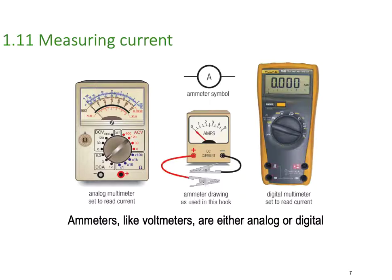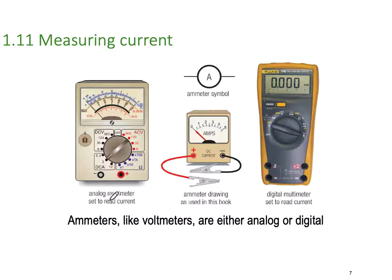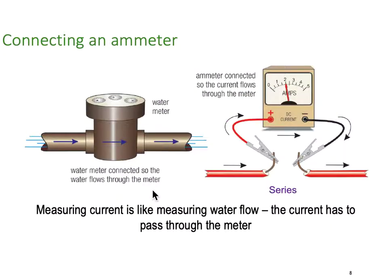Now, how about measuring current? We can do that with an analog meter. We have an analog multimeter, this time set to DC amps. We can also get a fixed ammeter. The symbol is just a circle with an A in it for ammeter. And here we have a Fluke digital meter set for amps.